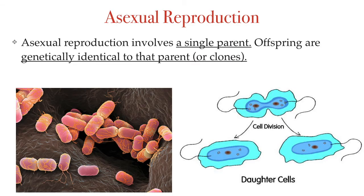Asexual reproduction involves basically a single parent. Offspring are genetically identical to that one single parent, and they're essentially clones of that parent.